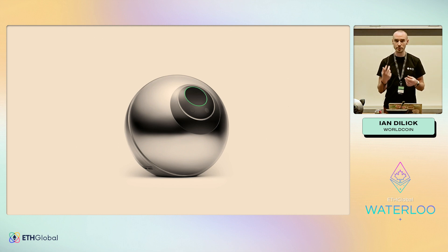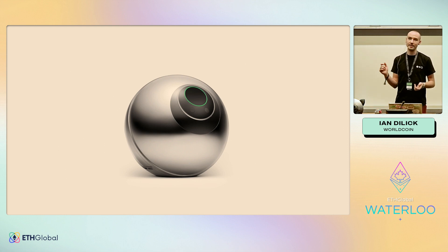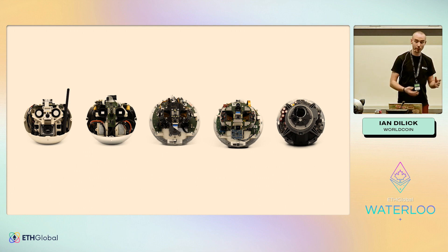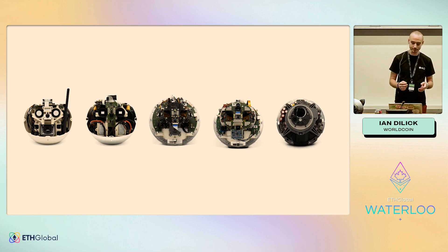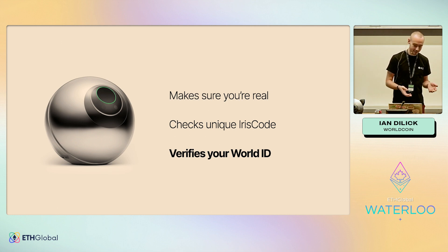The Orb is the device we use to identify you as a unique human. It takes photos of your iris, computes an iris code on the device, and compares that iris code to all other iris codes that have been scanned, verifying that it's unique. Today we're confident our algorithms can handle one in a billion, and they're always improving. The Orb has been in development since before COVID — early 2020 — and has gone through many revisions. We started with two cameras, one for each eye, but eventually moved to one camera that can move a gimbal mirror to see both eyes.